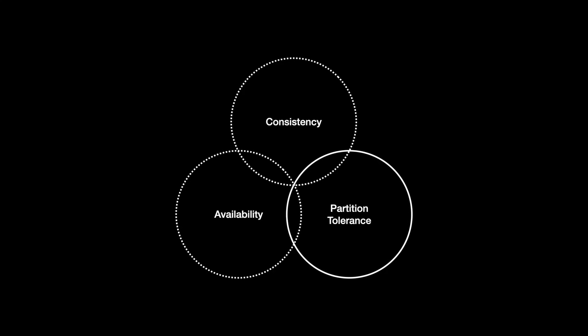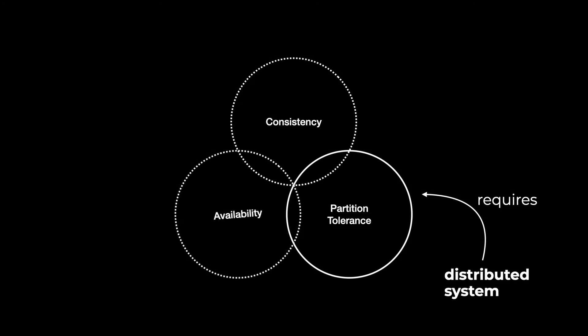When we talk about scalable systems and distributed systems, partition tolerance needs to be there — you have that for a fact. So that means you now need to pick either availability or consistency. Let's get out of the boring terminology of the theory and see a practical example.